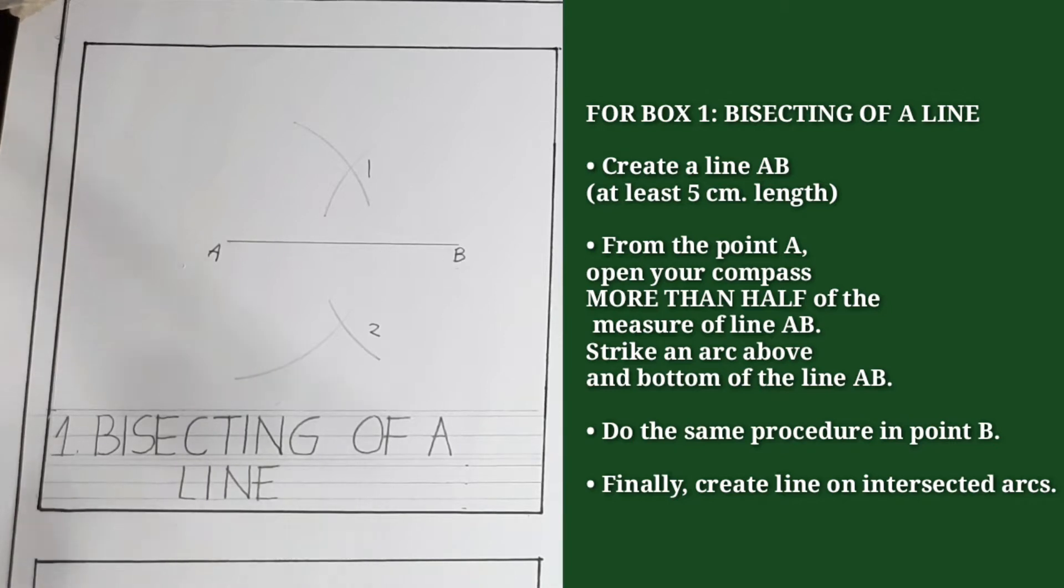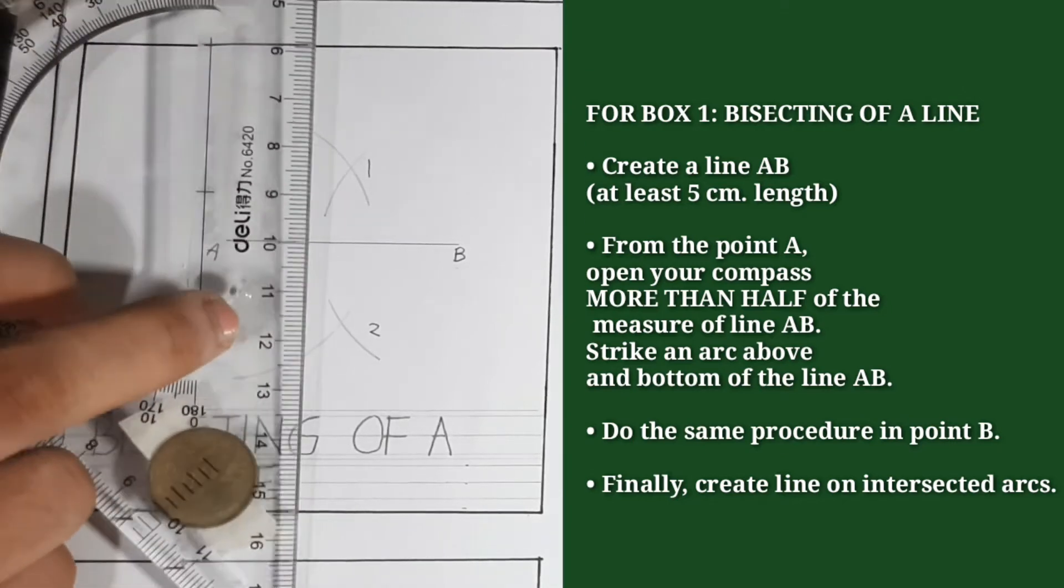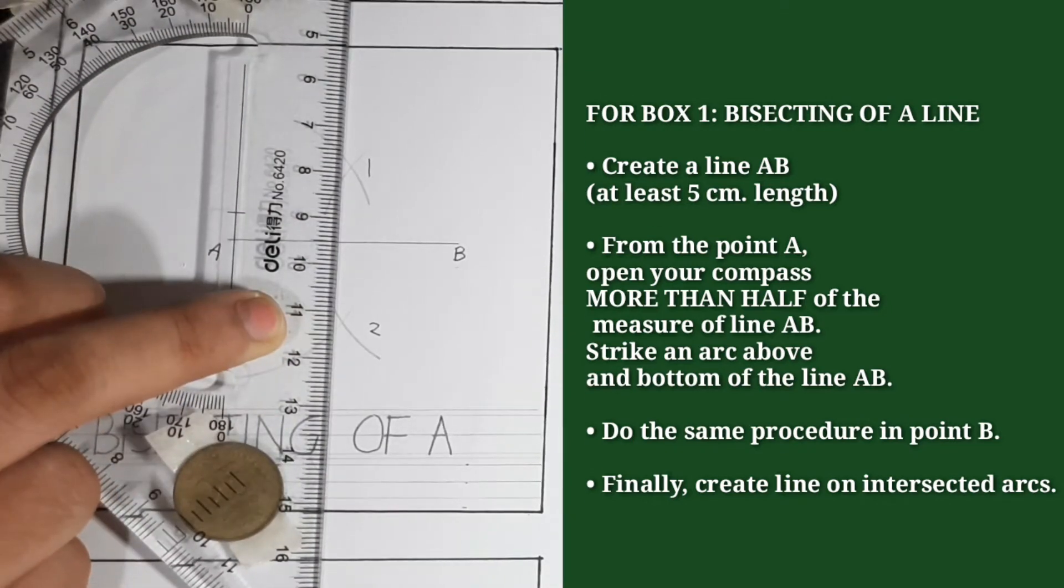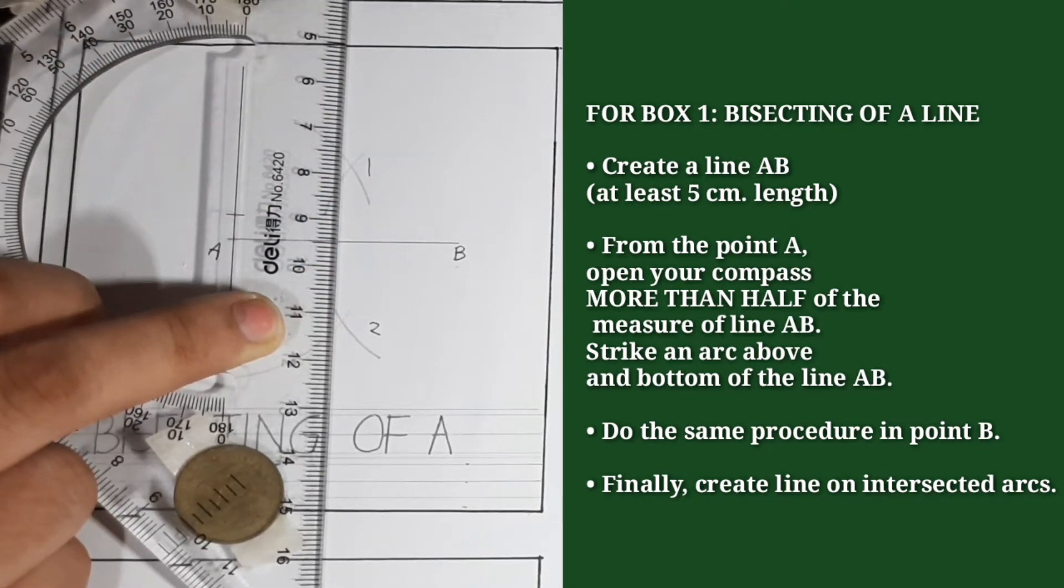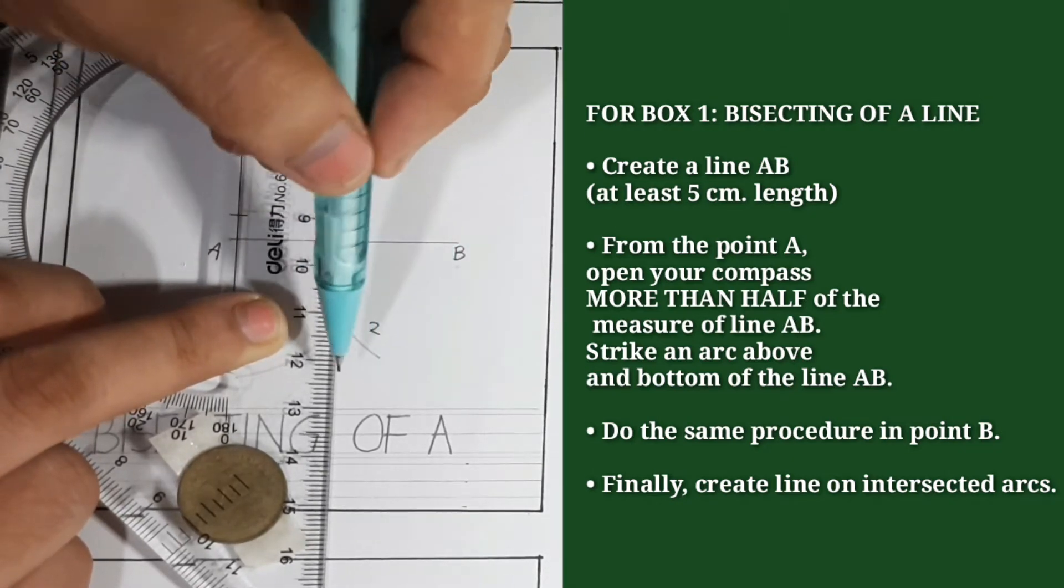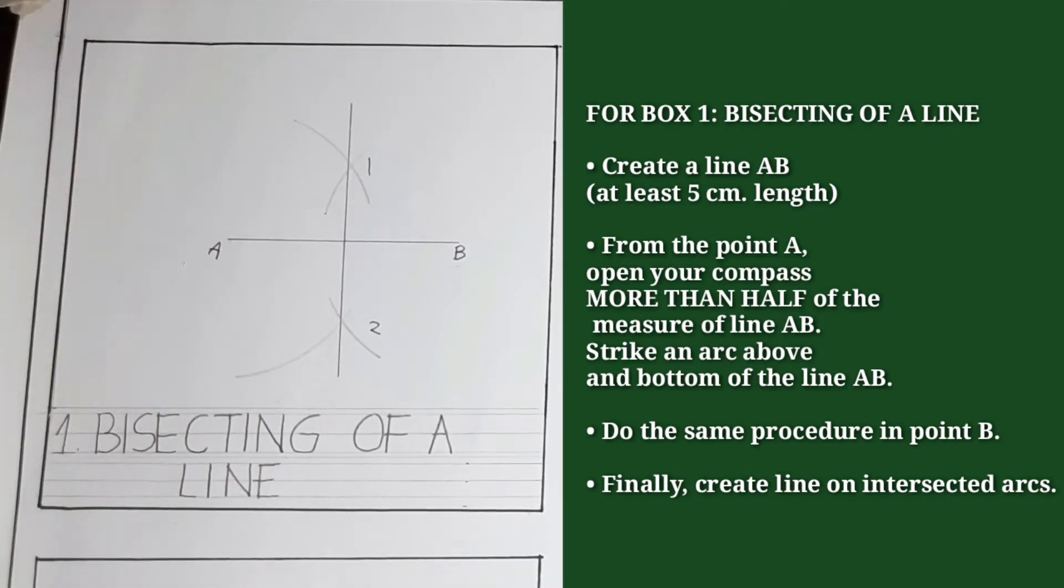From the intersected arcs, we will create a straight line. And now, we're done bisecting of a line.